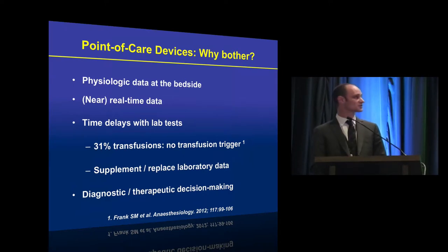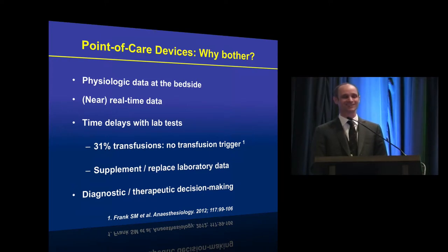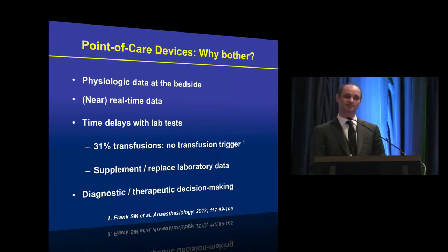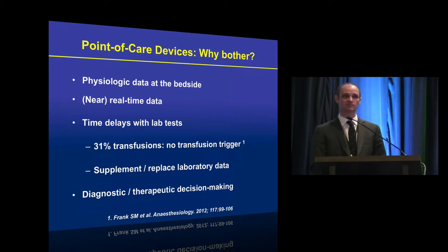This can be a problem clinically because if you're dealing with a patient that has postpartum hemorrhage, you may not be able to afford to wait until you get the result back before you transfuse. There's certainly data in the non-obstetric setting suggesting that in nearly a third of transfusions, there's no evidence of a hemoglobin trigger before the transfusion was given. So these devices can help supplement and maybe even replace the need for lab testing, and can be used for diagnosing anemia or coagulopathy, or helping you determine how best to treat them.